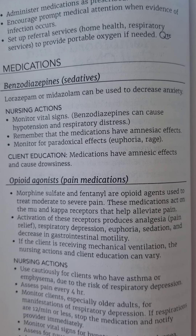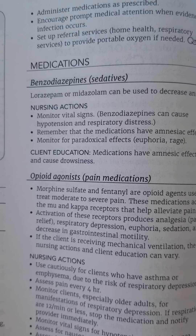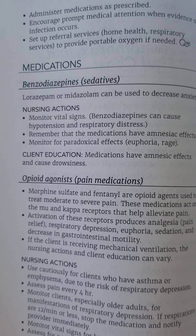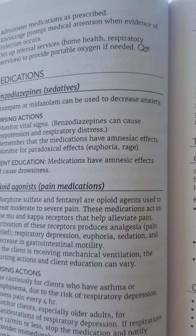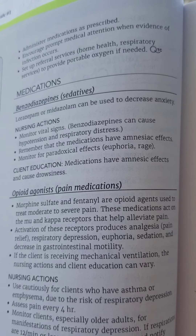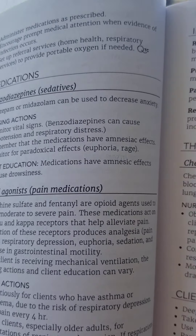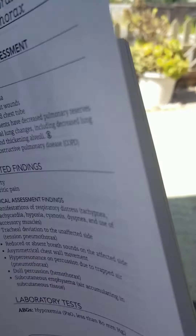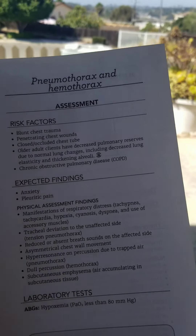Continuing on page 156, chapter 25, ATI, regarding hemothorax, pneumothorax, and flail chest.